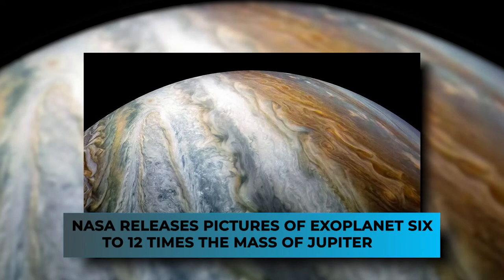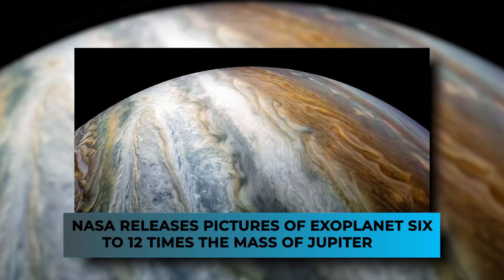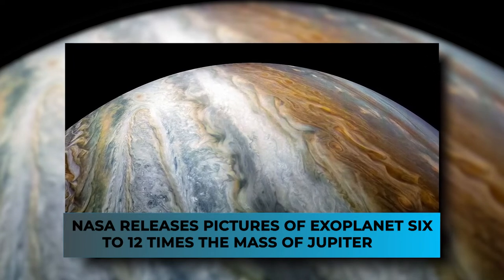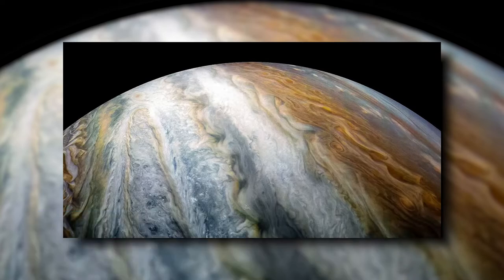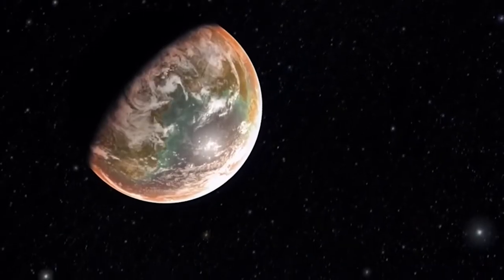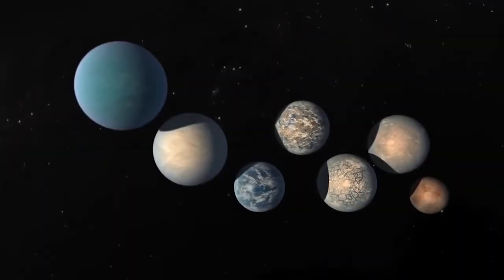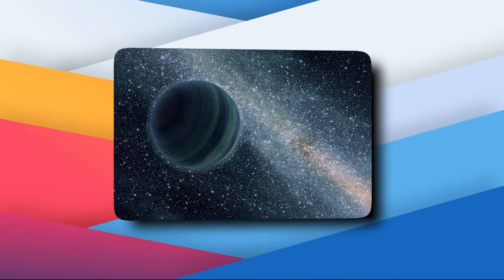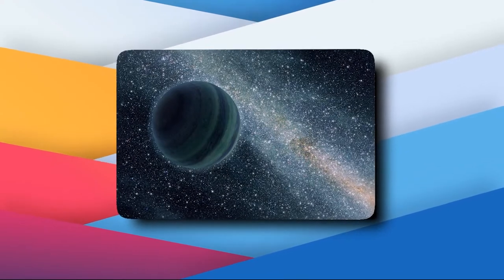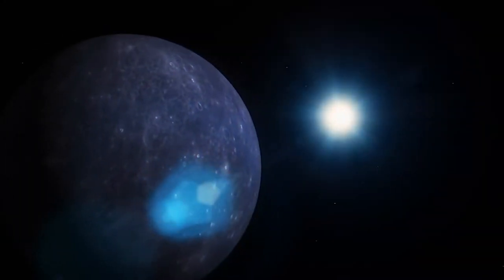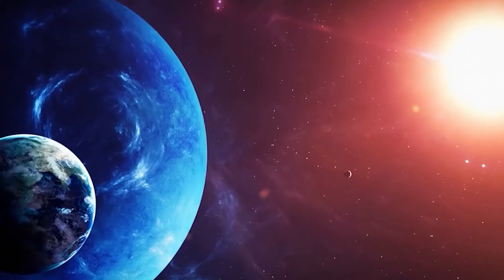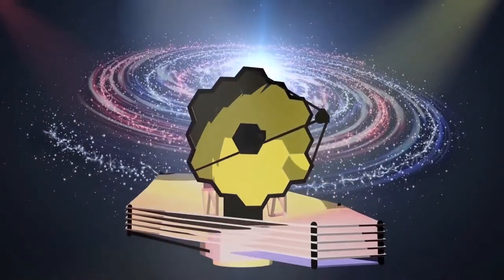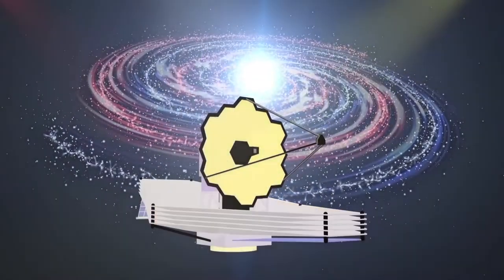Finally, as a bonus, NASA releases pictures of exoplanet 6 to 12 times the mass of Jupiter. It might look like a few colorful smudges, but it could be the next step toward finding other planets that are good places to live. NASA has released the first picture of HIP-65426b, a planet outside of our solar system that is 6 to 12 times as heavy as Jupiter. It is the first time that astronomers have used NASA's James Webb Space Telescope to take a direct picture of a planet outside our solar system.